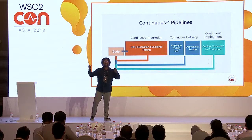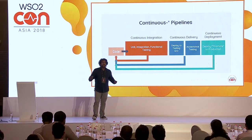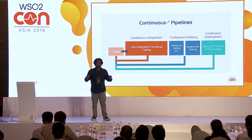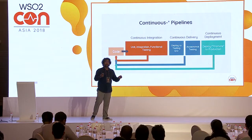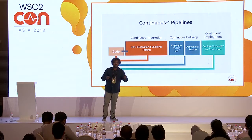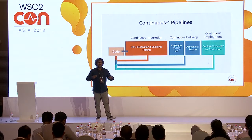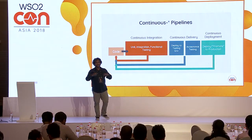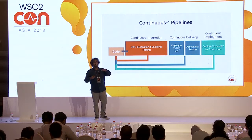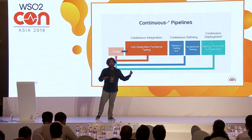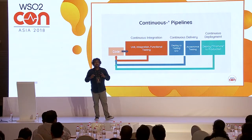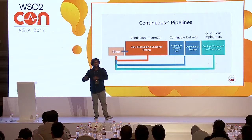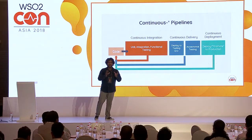Why do we call it continuous integration? That's where all the different systems — third-party systems, outside systems — integrate with your pipeline. When I say outside system, it can be a test suite, a vulnerability scan, or a code scan. So you are integrating different types of systems in the continuous integration phase, and every code change has to go through each of these systems before being promoted to other environments.